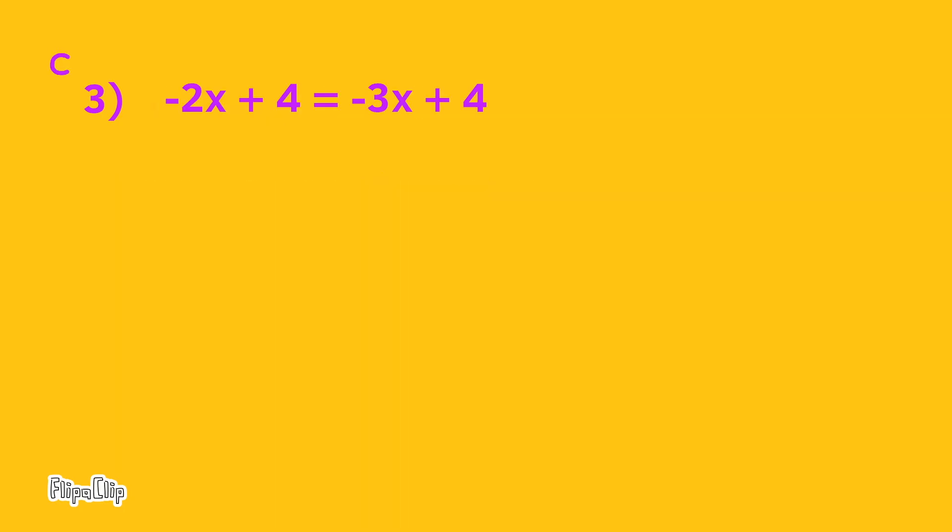C. Negative 2x plus 4 equals negative 3x plus 4. When x is equal to 0, this is true. So this equation is true for one value of x.